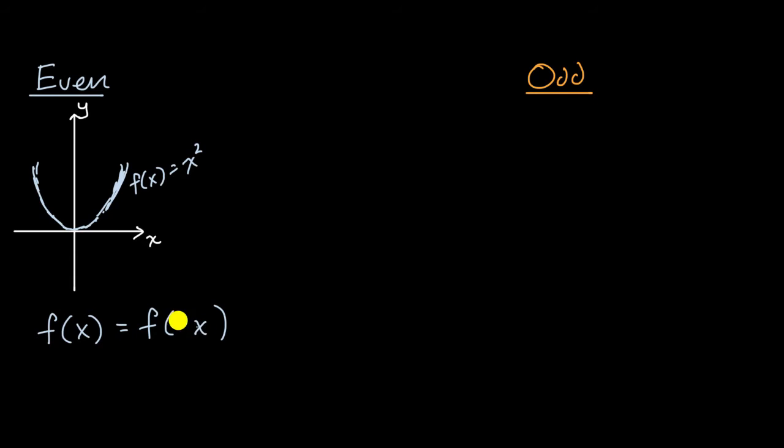Because if you were to replace your x's with a negative x, that flips your function over the y-axis. Now what about odd functions? So odd functions, you get the same function if you flip over the y and the x-axis. So let me draw a classic example of an odd function.